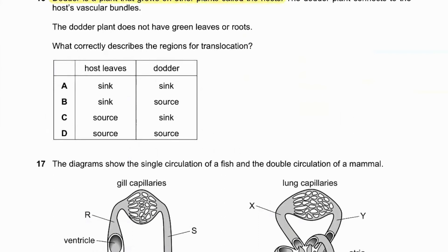Question number sixteen: dodder is a plant that grows on another plant called the host. The daughter plant connects to the host's vascular bundles and has no green leaves or roots. What correctly describes the regions for translocation? The host leaves act as the source, providing nutrients, and the daughter plant acts as the sink. So 16C is the correct answer.